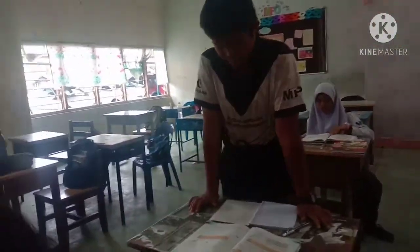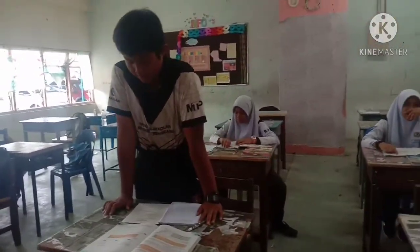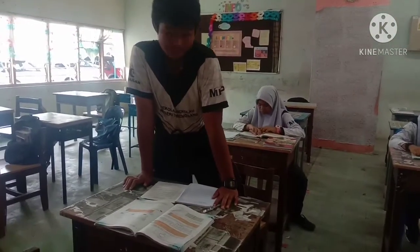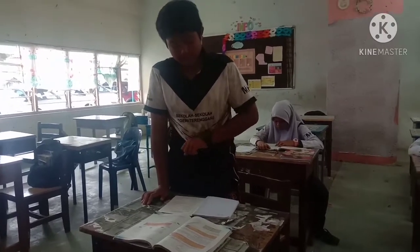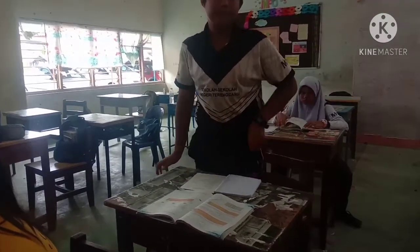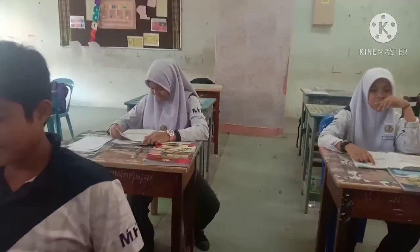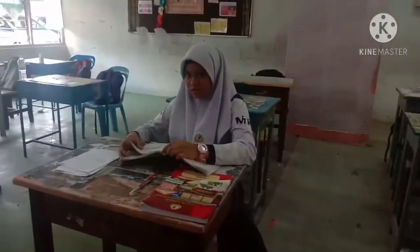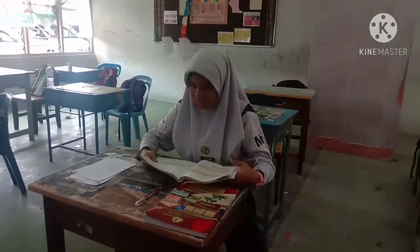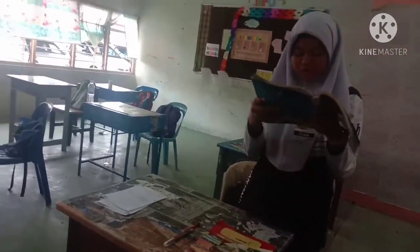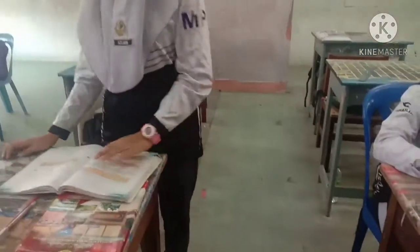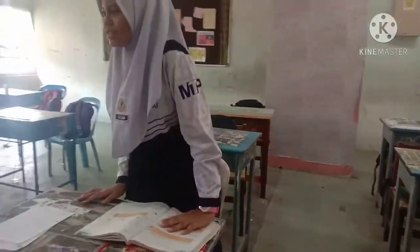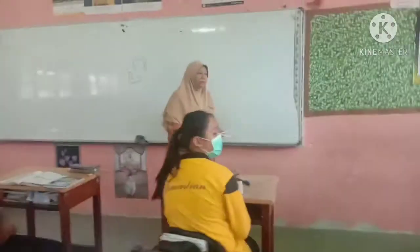B. Perbezaan antara instrumen lukisan. Betul. Paksi dia menegak, sudut 90°. Seterusnya, paksi condong, sudut 30°. Itu untuk alat-alat, untuk lukisan oblique.